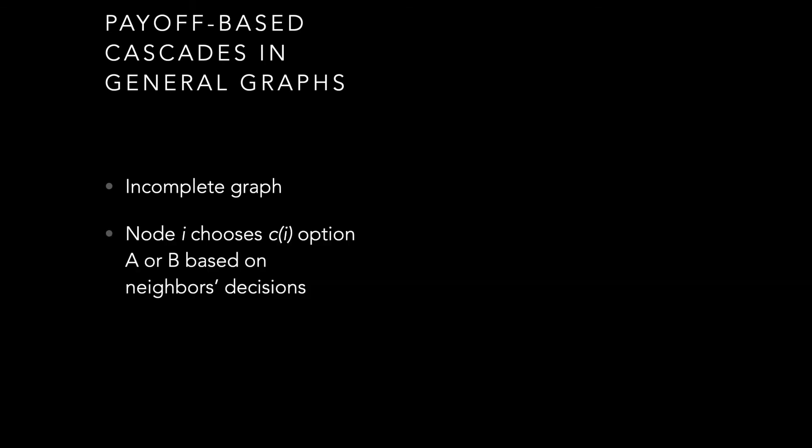The last model we'll talk about is payoff-based cascades, where we violate the assumption from the collective action model. Instead of seeing everybody, we have some incomplete graph, and a particular node in the graph gets to choose some option based only on that node's neighbors. I don't see everybody — I look at my neighbors and their choices, and take some action based on what their decisions are.